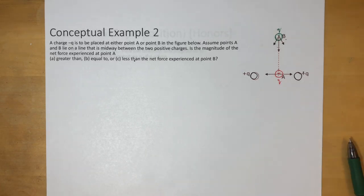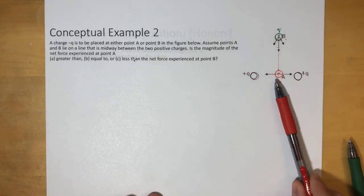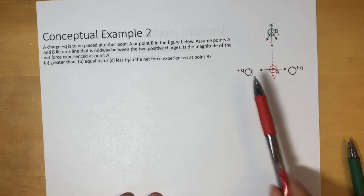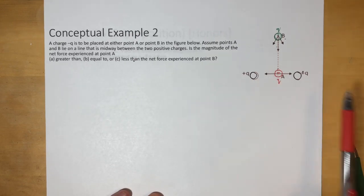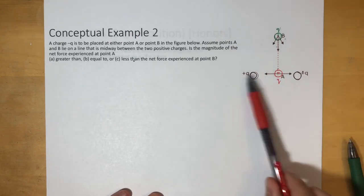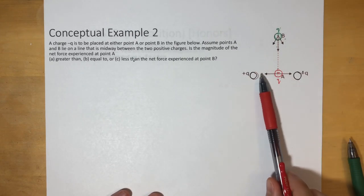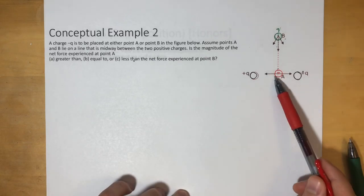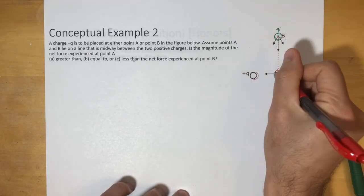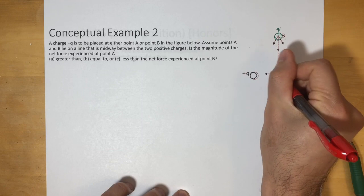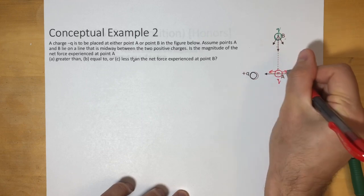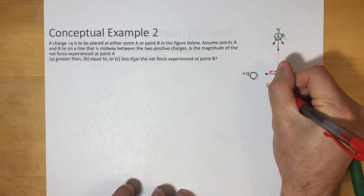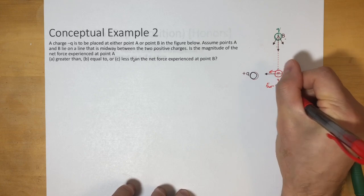This negative charge at point A — you might think it's closer, so it must experience more net force. However, that wouldn't be correct, because this one would get pulled to the left and pulled to the right equally. So the net force of the red one would equal zero.